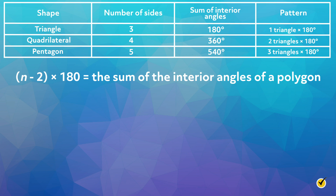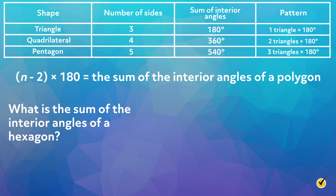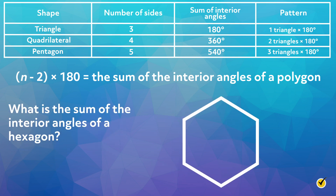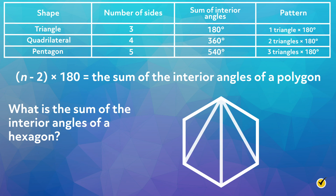Let us test our formula. What is the sum of the interior angles of a hexagon? We know that a hexagon has six sides, therefore 6 minus 2 times 180 equals 720 degrees, which is the sum of the interior angles of a hexagon. Let us confirm our finding by drawing a hexagon and dividing it into triangles. As you can see, there are four triangles and 4 times 180 is 720.